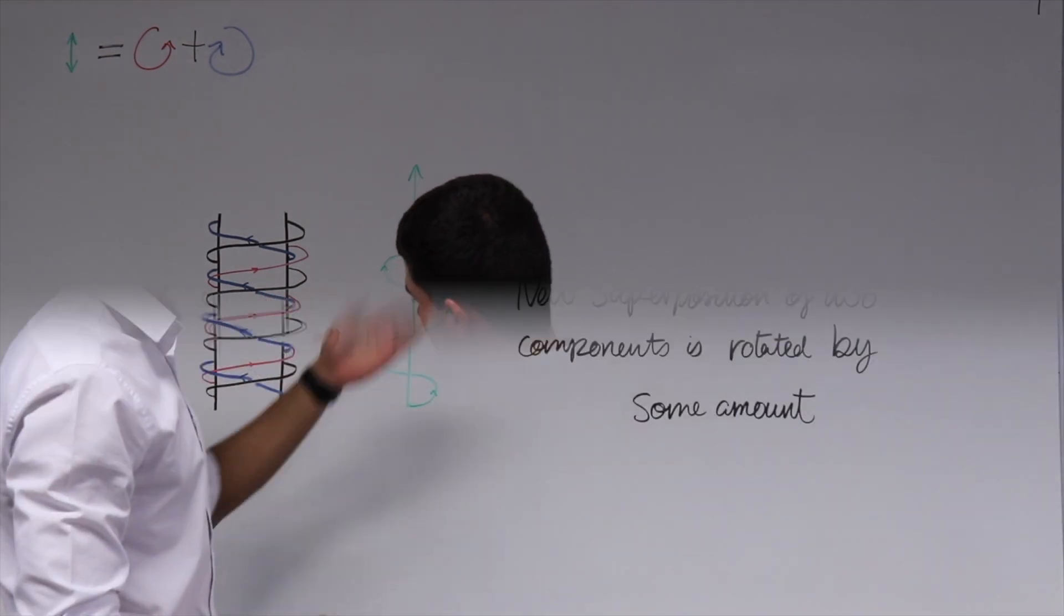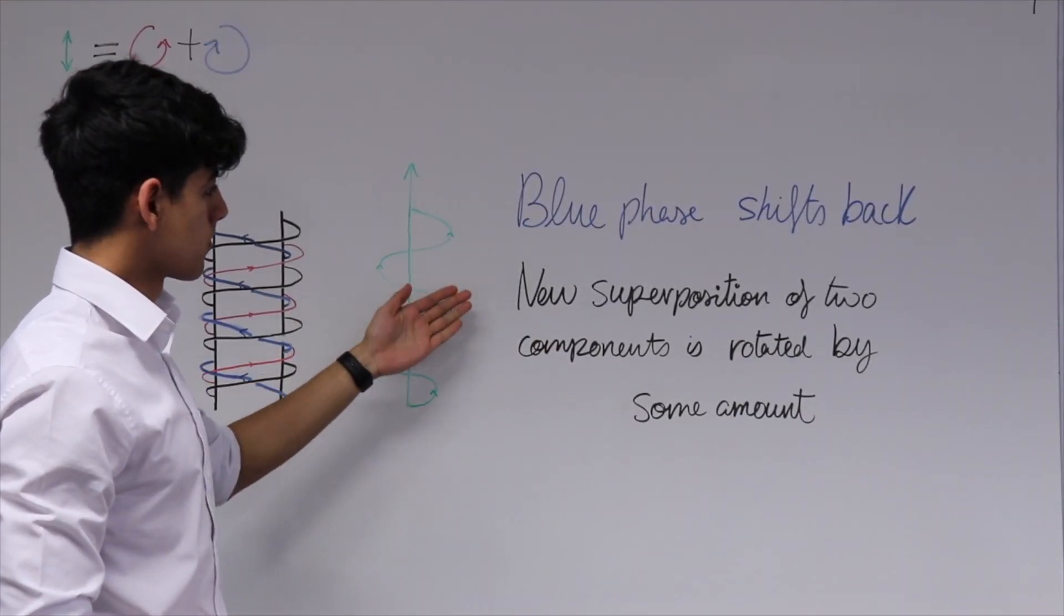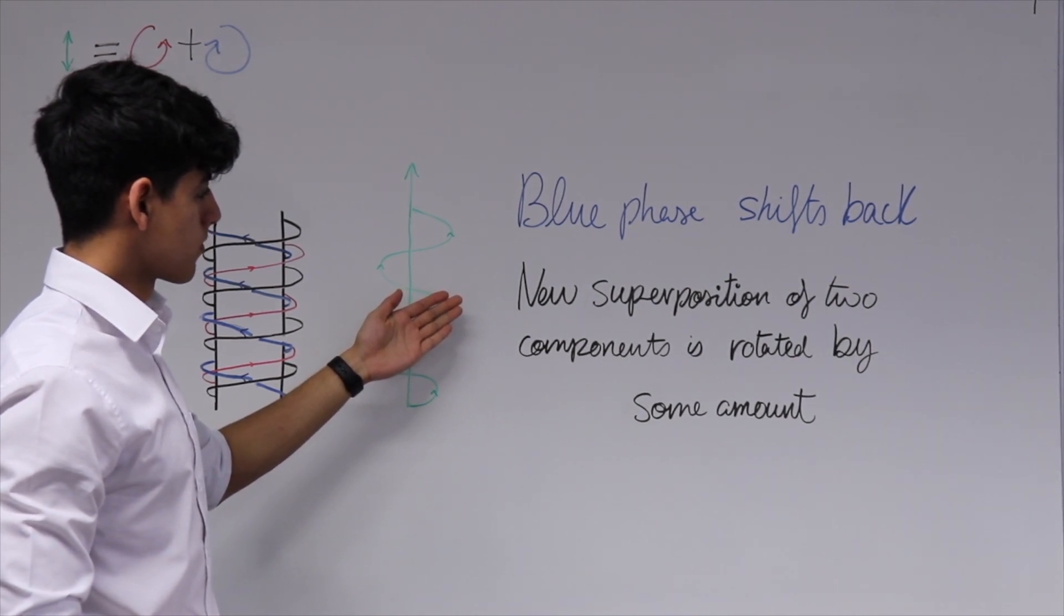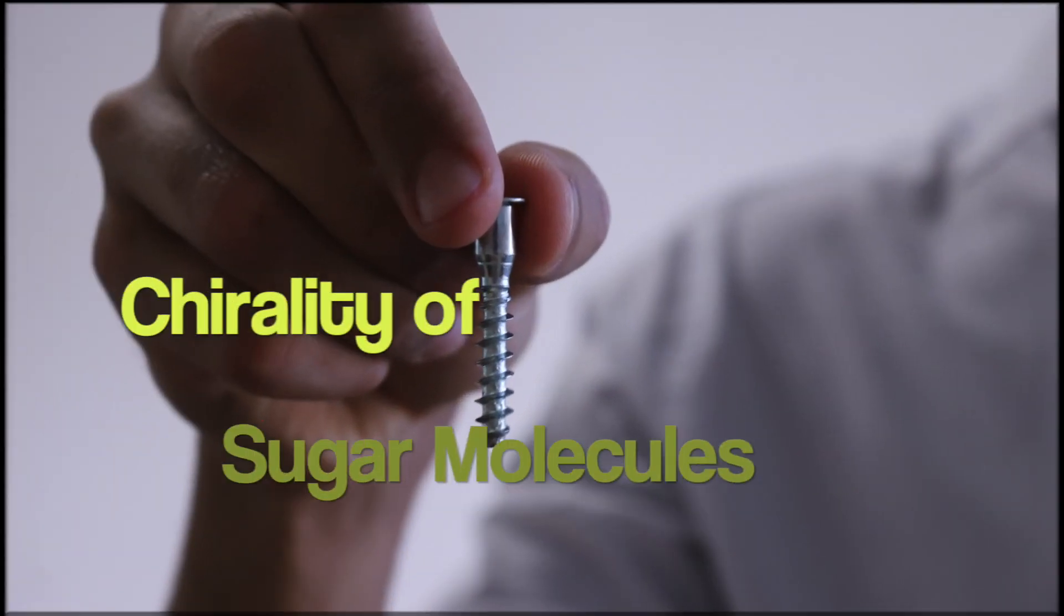As a result, because it's slowed down, the blue component is shifted back. This means the two circular components interfere differently, adding up to form a linearly polarized light wave that is rotated by some amount.